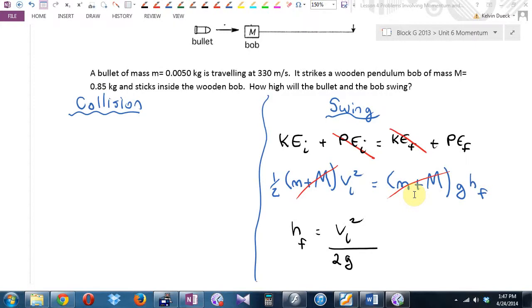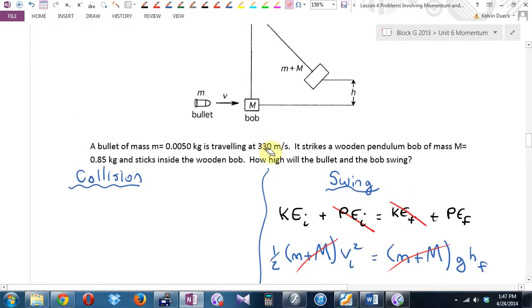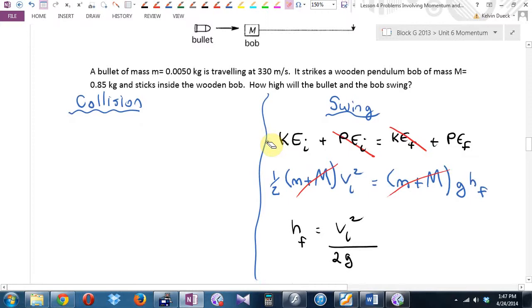Let's do our check to see if we can solve this. Do I know g? Yep. Do I know the initial speed that they start swinging off together? I'm going to tell you what, it's not going to be 330, because I think the bullet after it hits is going to slow down. Did I say the word hits? That's a synonym for collision.